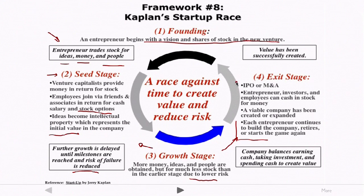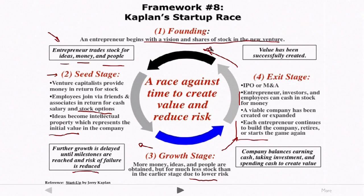In the exit stage, we might have an initial public offering or a merger and acquisition — we'll talk more about these terms later in the course. If there's an IPO or acquisition, the entrepreneur, investors, and employees can cash in and trade their stock for money. A viable company has been created, and the entrepreneur can either continue to build the company, retire, or start the game again. The idea of the startup race is that if you run out of time or money before creating enough value or reducing enough risk, the startup fails. But if you can create value and reduce risk fast enough, you continue on the path.